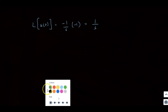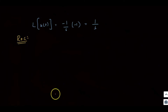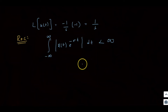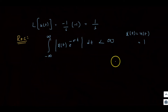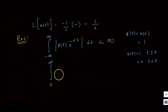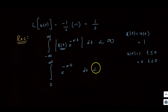Now for the ROC, recall the ROC condition: the integral from minus infinity to infinity of |x(t)| times e^(−σt) dt must be less than infinity. Since u(t) is defined only for positive values with u(t) = 1, the integral becomes from 0 to infinity of e^(−σt) dt, which must be less than infinity.